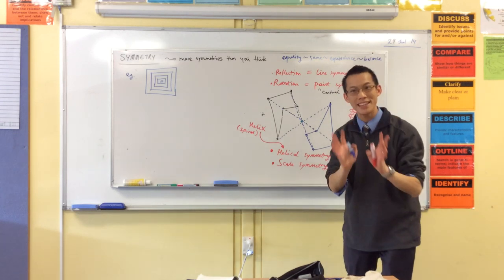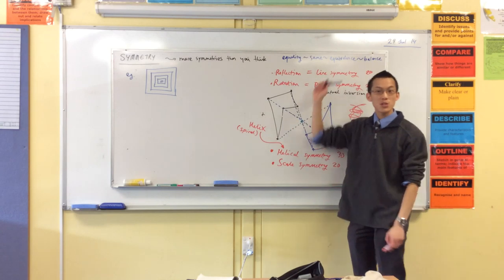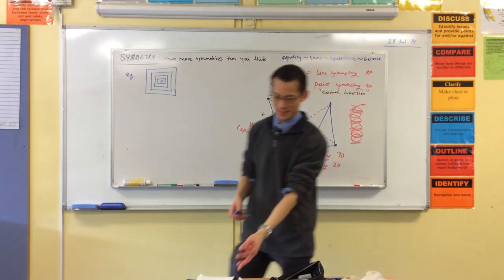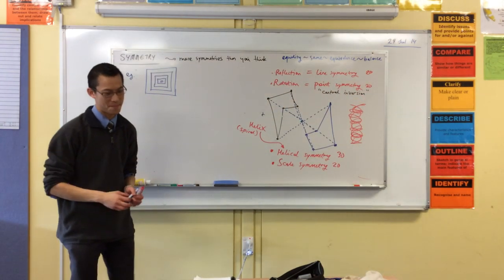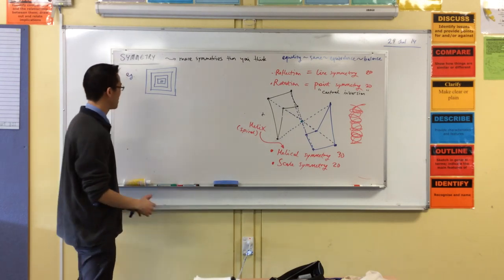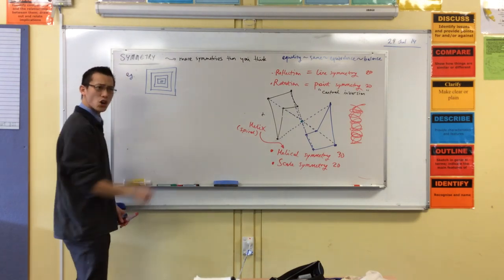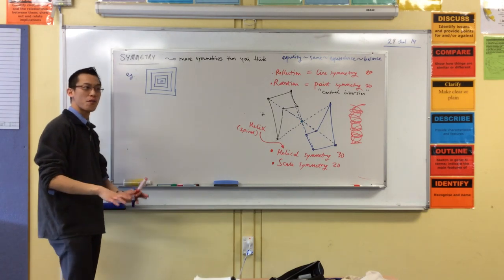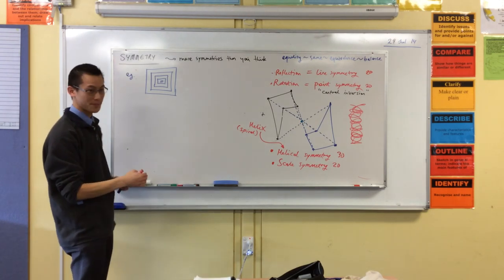But where it gets really, really fun is where you start to combine some of these symmetries, okay? It's where you start to combine them. So I'm going to give you two really cool, really interesting examples. First, we'll just go off the square, okay? I'm going to start this off, but I want you to do this properly. I'm going to do kind of like the shortcut version, okay?